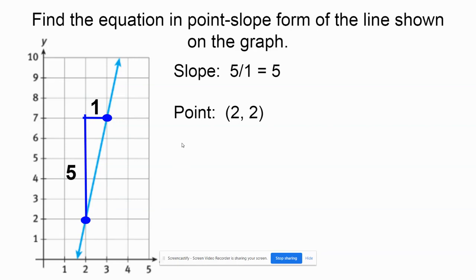Then I'm going to substitute all these values into my formula. So I'll have y minus 2, which was my y value, equals 5, which was my slope, times x minus 2, which was my x value.